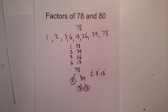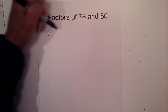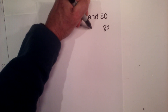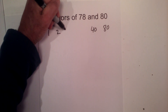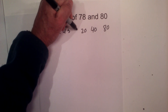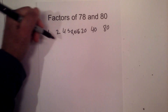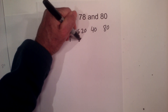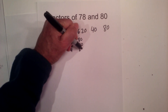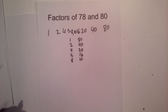Let's find the factors of 80. Starting with 1 times 80, then 2 times 40, 4 times 20, 5 times 16, and 8 times 10. Writing these in pairs: 1 times 80, 2 and 40, 4 and 20, 5 and 16, and 8 and 10 — those are the factors.